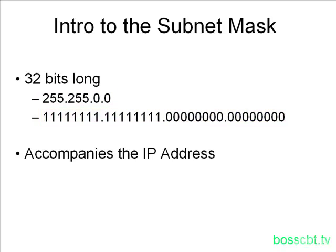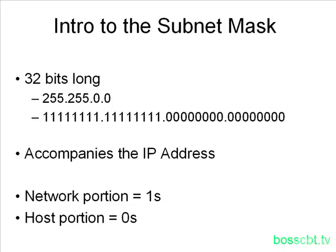If the job of the subnet mask is to tell a router which portion of the IP address is the network portion and which portion is the host portion, how does it do that? It's pretty simple, actually. The subnet mask will use a one to represent the network portion, and it'll use a zero to represent the host portion. And it's as simple as that. This is why understanding binary is important in order to grasp both IP addresses and the subnet mask.